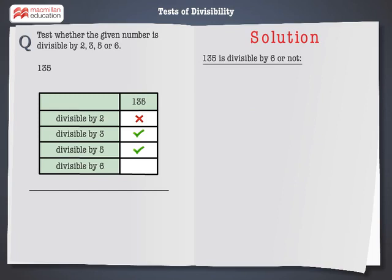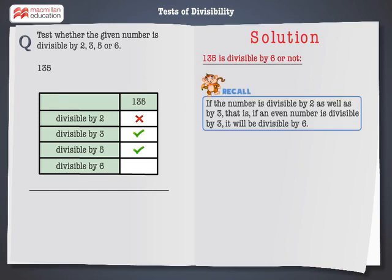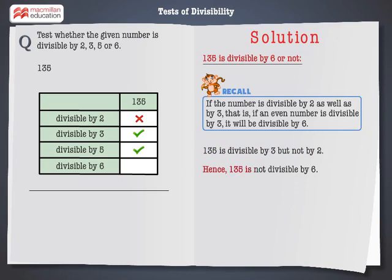Now, check whether the number 135 is divisible by 6 or not. Let's recall that if a number is divisible by 2 as well as by 3 — that is, if an even number is divisible by 3 — it will be divisible by 6. As solved earlier, 135 is divisible by 3 but not by 2. Therefore, 135 is not divisible by 6. Hence, 135 is divisible by 3 and 5 only.